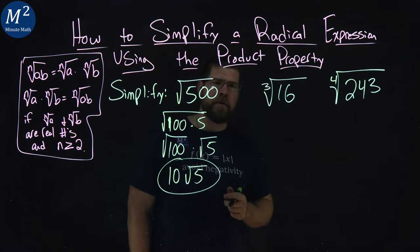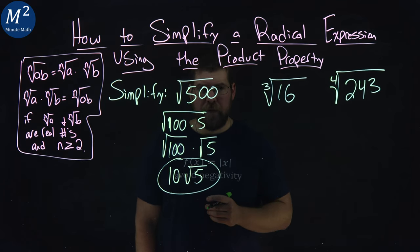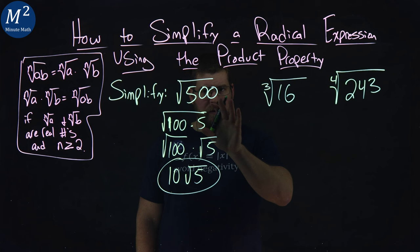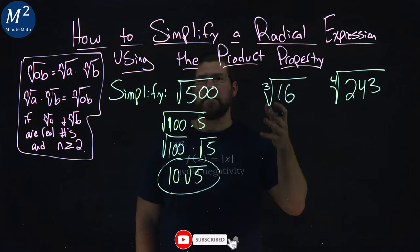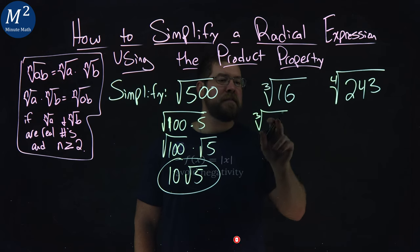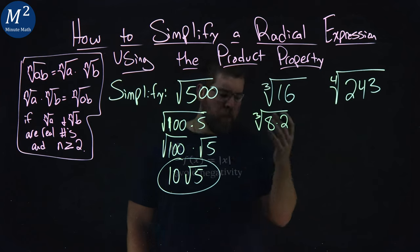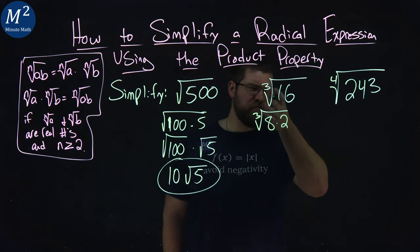Now, the third root, a little more difficult. We have a third root of 16. We want to break this now to not a perfect square, but a perfect cube. That's going to be 8. We have a third root of, instead of 16, I have 8 times 2 here. And the more you practice this, the better you'll get at recognizing this.